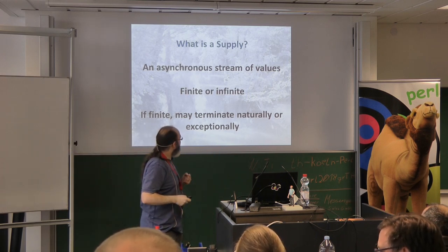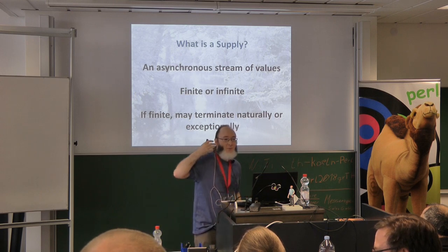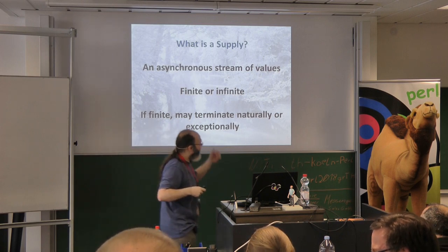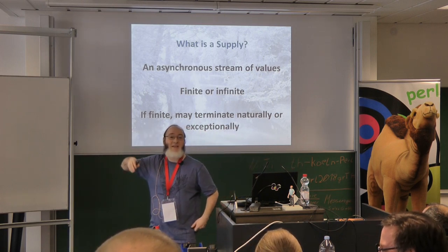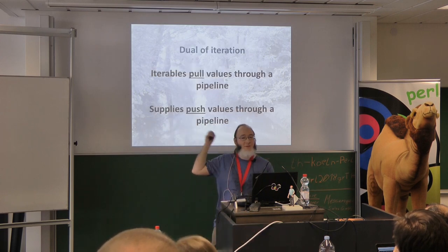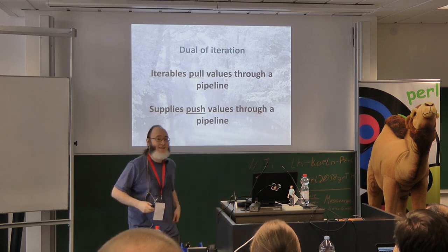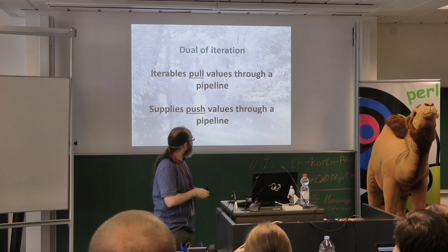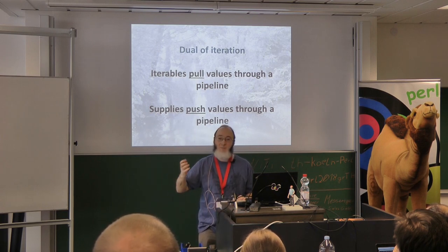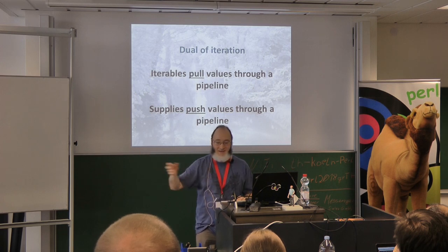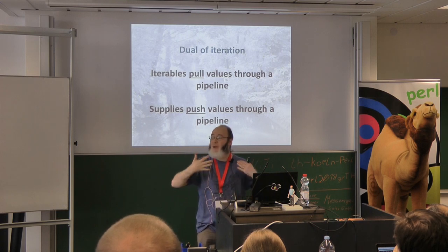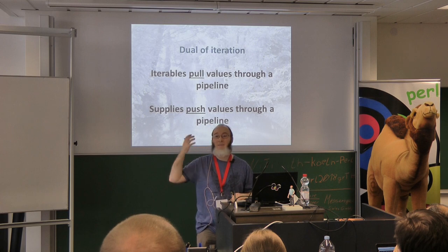A supply is a bit like a promise, but if you think of a promise as an asynchronous scalar, then a supply is like an asynchronous array — except it's more like an iterator. There's a mathematical equivalence between supplies and iterable things. With an iterator, when you want the next value you pull — you say 'give me one more value' and wait, which is what makes it blocking.